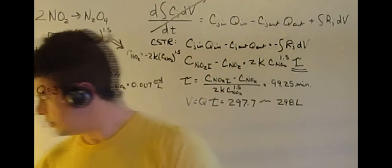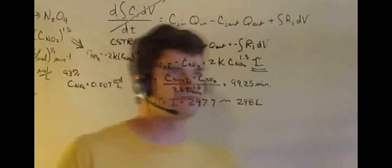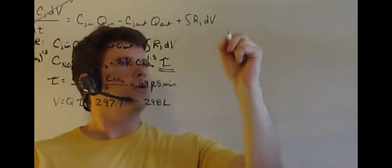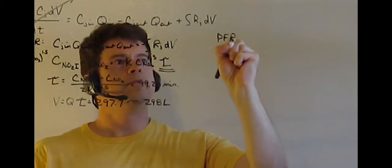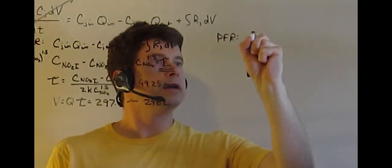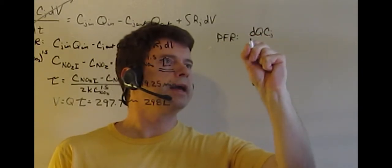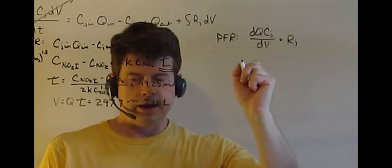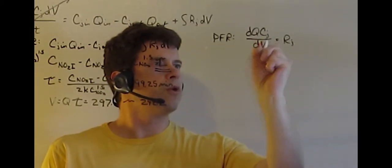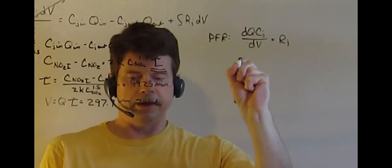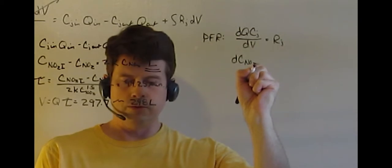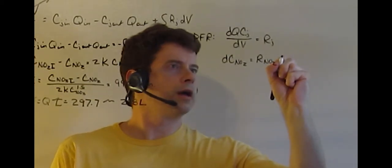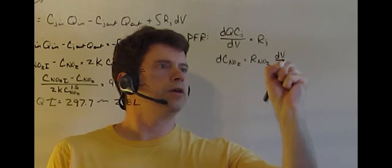Now as we compare this to what we get from a plug flow reactor, our equation in this case, of course it's still steady state, but now we're going to have to do some integration because our PFR formula becomes DQCJ over DV equals RJ. So in this case, we put in the values for the DJ, that becomes DCNO2 equals the rate